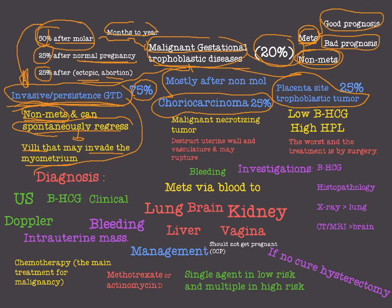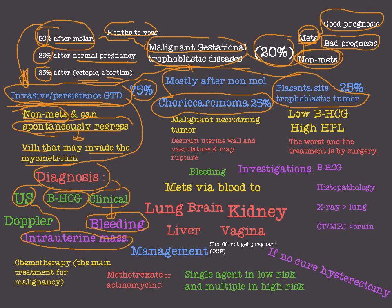To diagnose invasive or persistent GTD, we use beta-hCG levels, ultrasound, and clinical findings. The most common presentation is bleeding. On ultrasound you can see an intrauterine mass, and on Doppler ultrasound you can see increased vascularity of the tumor. Diagnosis is also confirmed with histopathology.